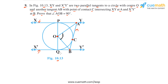The proof is quite simple. To understand it, let's first join the center O with the point of contact C. Now if you compare triangle OAP with triangle OAC, it's easy to show that these two triangles are congruent, and therefore angle OAP will be equal to angle CAO.